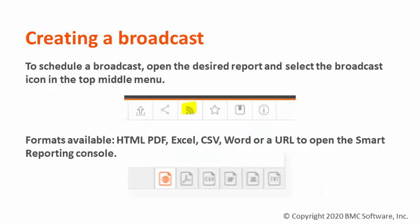To scale a broadcast, open the desired report and select the broadcast icon in the top middle menu. It will give six options to send it: HTML, PDF, Excel, CSV, Word, or URL to open the Smart Reporting console.